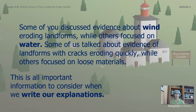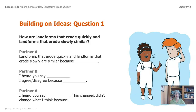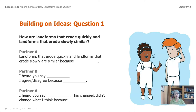Our last activity — we're going to build on these ideas. If you have a family member available, this would be a great opportunity to have them join you. You've done this activity perhaps in your classroom — building on ideas — so your family member can be your partner. You have sentence stems in your packet. Pause the video so you can use these sentence stems to talk to each other about this question: how are landforms that erode quickly and landforms that erode slowly similar?